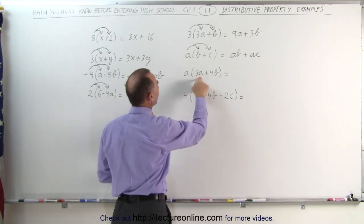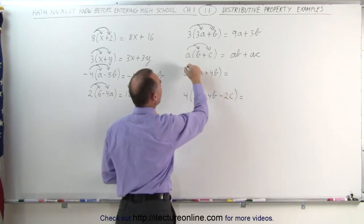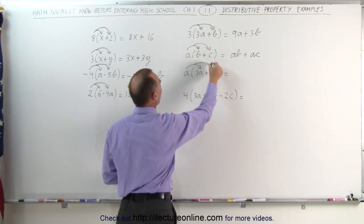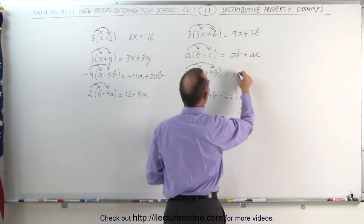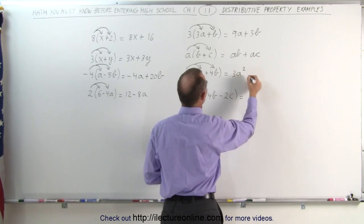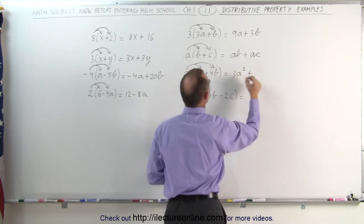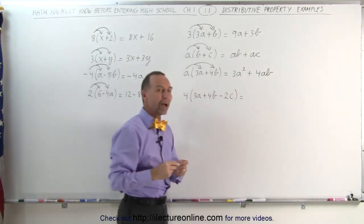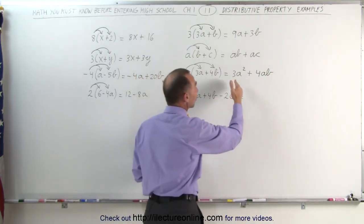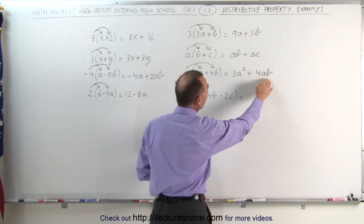Here we're multiplying the a times three a, and the a times four b. Again, we distribute the a across both terms in the binomial. A times three a is three a squared, because a times a is a squared, plus a times four b gives me four a b. It's traditional to write the letters representing either constants or variables in alphabetical order, so you tend to write the a before the b.